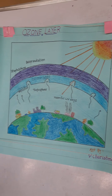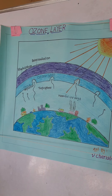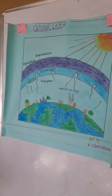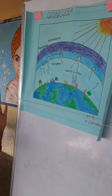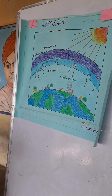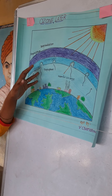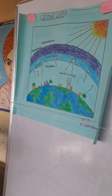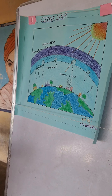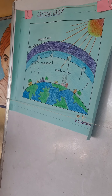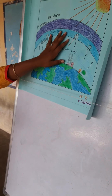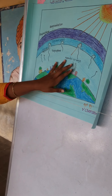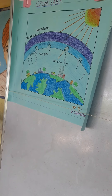The ozone layer is present in the stratosphere, approximately 15 to 35 kilometers above earth. It is blue in color and has a strong odor. It contains three oxygen atoms. It absorbs the ultraviolet radiations which come from the sun.